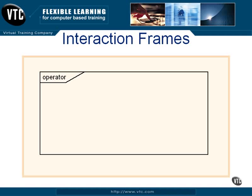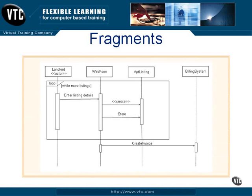So let's apply an interaction frame to our sequence that shows creating an apartment listing. We have the landlord, who is an actor, entering listing details. The web form creates and stores the apartment listing and also sends a message to the billing system to create an invoice. We've drawn an interaction frame around the part of the diagram that can loop. We have the operator 'loop' up here, and we have a guard condition here to show how long the looping behavior can continue — so while there are more listings, we can repeat this as many times as necessary.